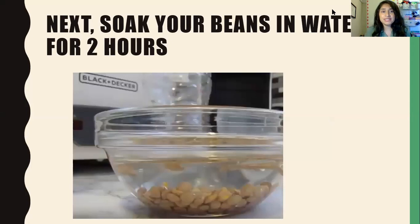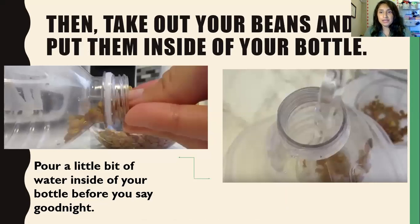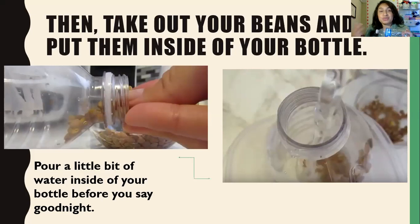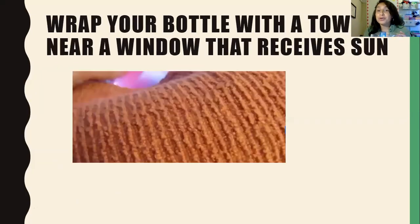Next, you're going to soak your bean babies in water for about two hours. Let them soak, let them take a bath and relax — for two hours, keeping a timer. After that, you're going to take out your beans and put them inside your bottle — this is going to be their little greenhouse. Remember the holes: there must be holes so they can breathe. Before you say goodnight to them, pour a little bit of water so they can soak in that hydration. Then wrap the bottle with a thin towel — a bathroom towel, a hand towel — anything, and place it near a window that receives sun.